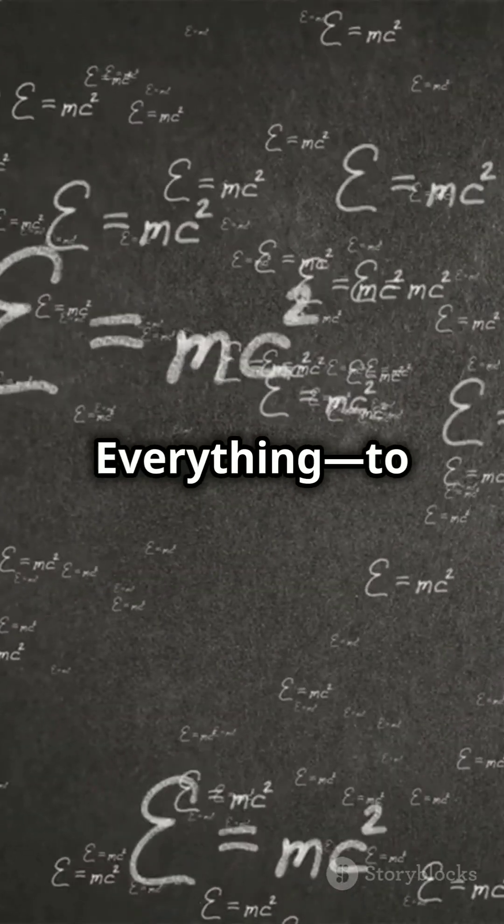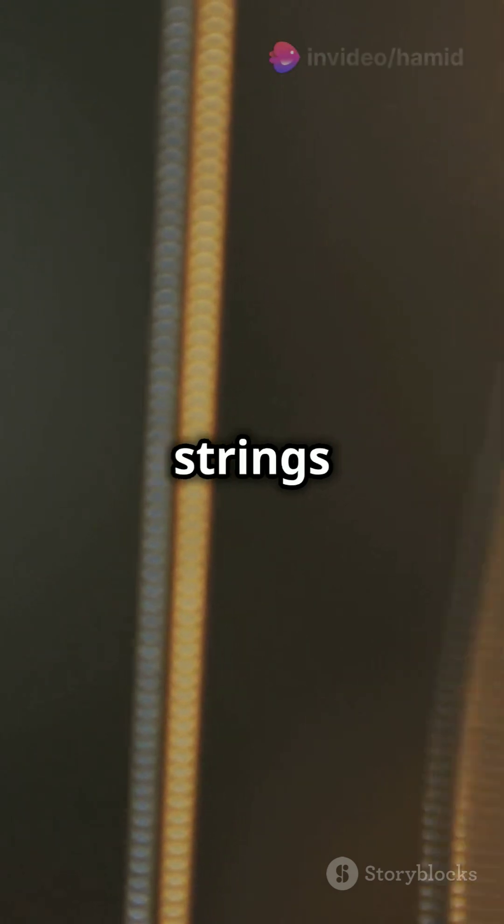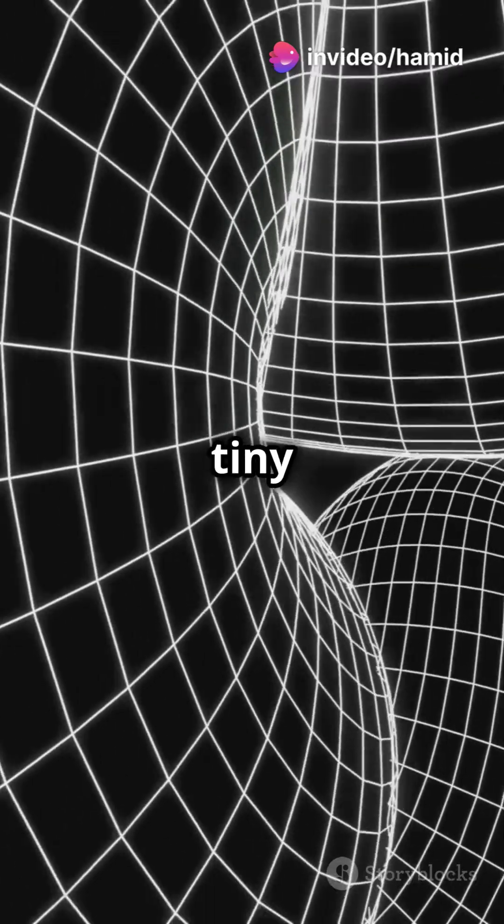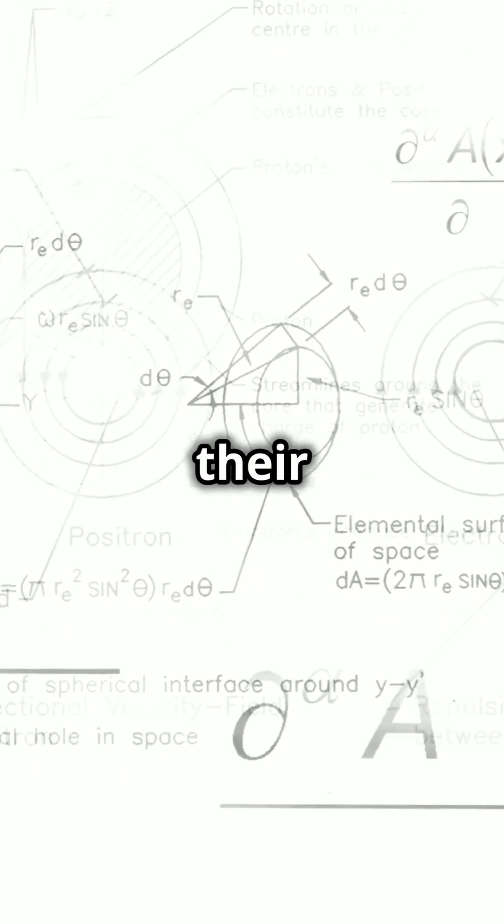That's why we need a theory of everything to unite them. We've got string theory—tiny vibrating strings instead of particles. Loop quantum gravity—space-time made of tiny loops, like pixels. And M-theory—multiple universes with their own rules.